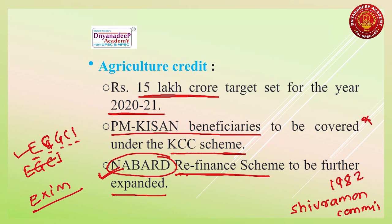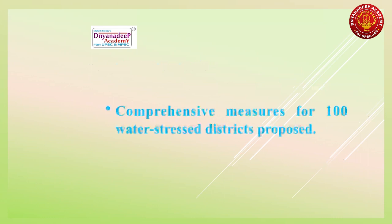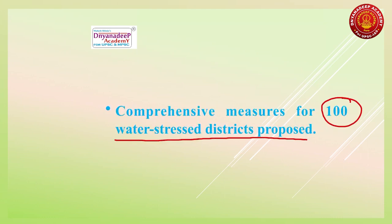The budget proposed that 100 water stressed districts will have measures taken for them. Keep this point in mind — you could get a question in interviews or prelims about which are water stressed districts and what measures have been taken. Students of geography as well as GS should remember this point, which is relevant for drought prone areas.